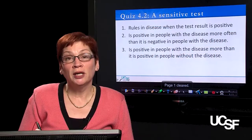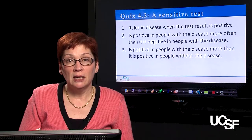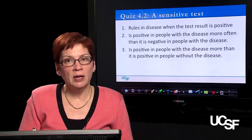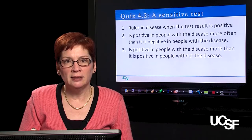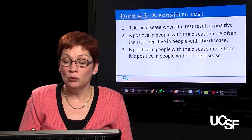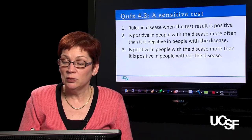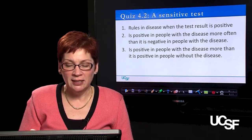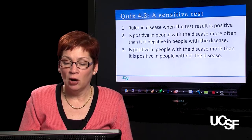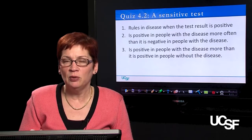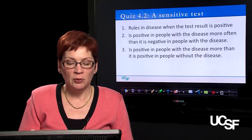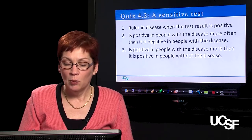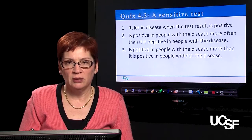This is an important concept, so let's take a quick quiz. When talking about a sensitive test, we're talking about a test that: number one, rules in disease when the test result is positive; number two, is positive in people with the disease more often than it is negative in people with the disease; or number three, is positive in people with the disease more than it is positive in people without the disease.